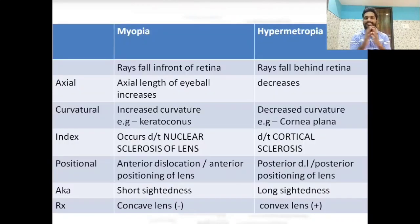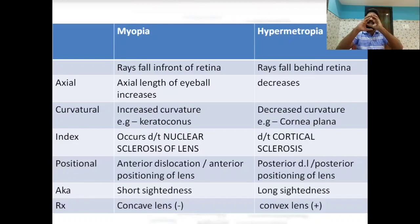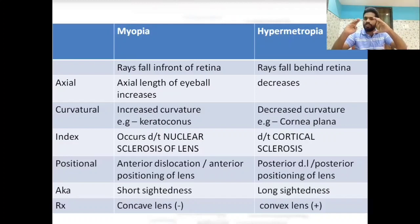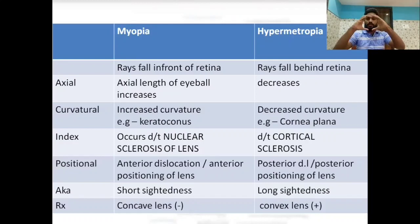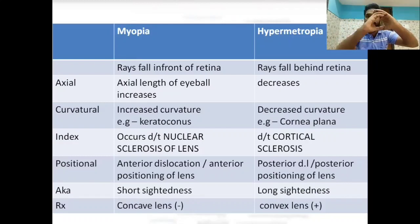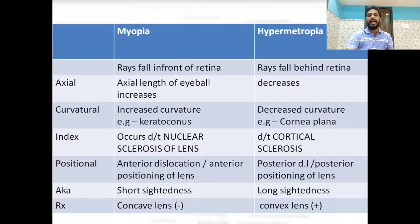In axial myopia the length of the eyeball is increased — the ray falls at the same point but lands in front of the retina due to the longer eyeball. In axial hypermetropia the length of the eyeball is decreased — the ray falls behind the retina. Curvature myopia occurs when corneal curvature is increased; an example is keratoconus. Cornea plana (flat cornea) leads to curvature hypermetropia.